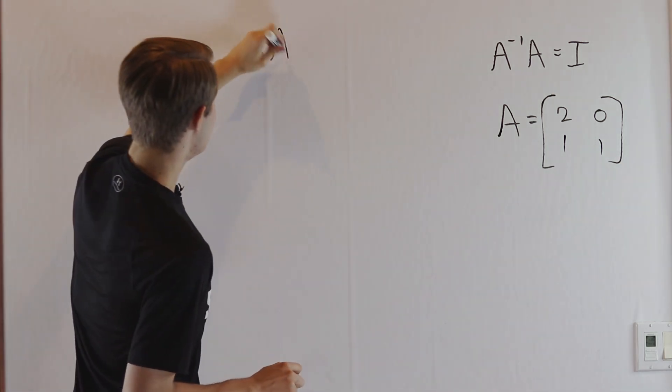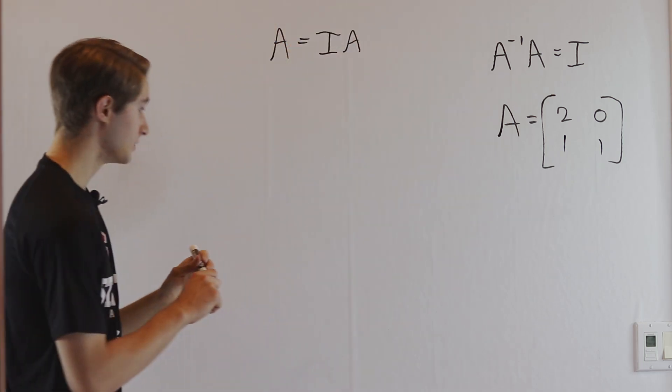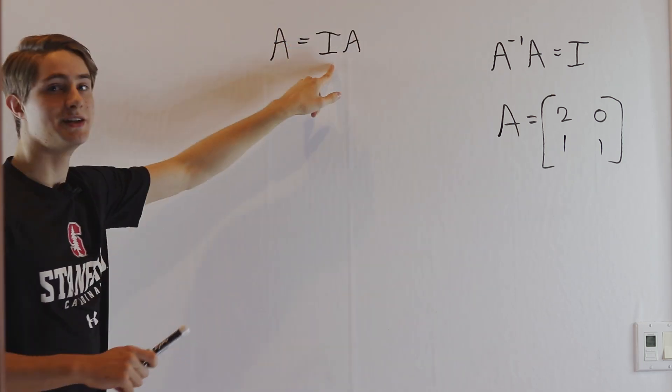I'm going to start by writing A = IA, which is true because the identity doesn't do anything.